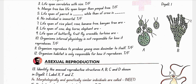An organism's internal physiology is not responsible for how it reproduces — false, it is responsible. Organisms reproduce to produce young ones dissimilar to itself — false. An organism's habitat is only responsible for how it reproduces — false. Its internal physiology and several other factors are responsible.